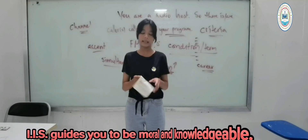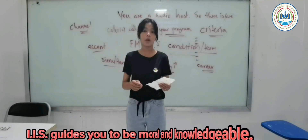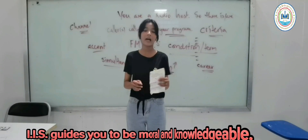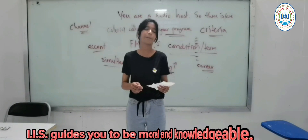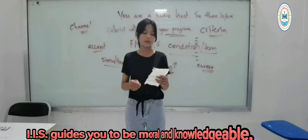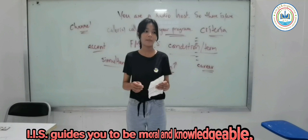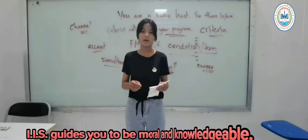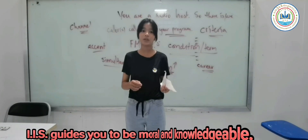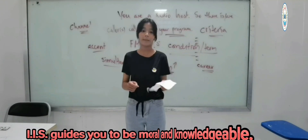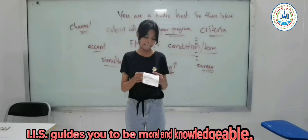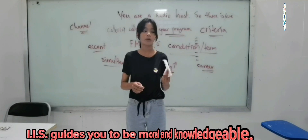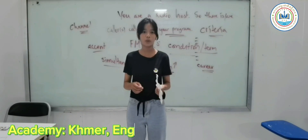And technology lets us know about the news and international news. It also can help us know about our location without asking anyone. And especially for shy people who find it hard to talk to others, they can use text to communicate. If you have a trip, you can also book a hotel by using your phone.